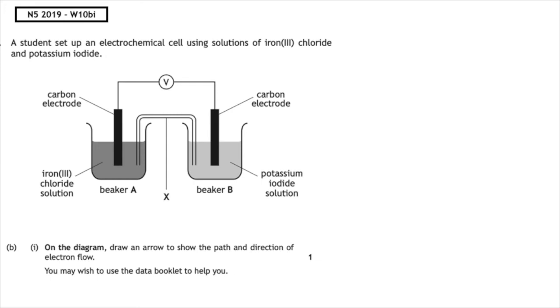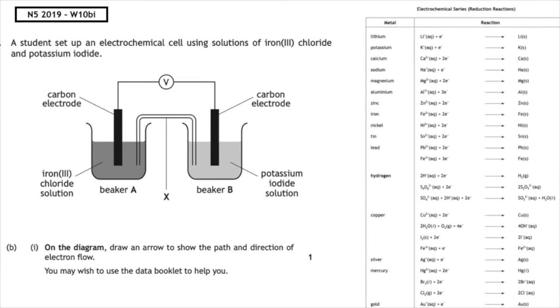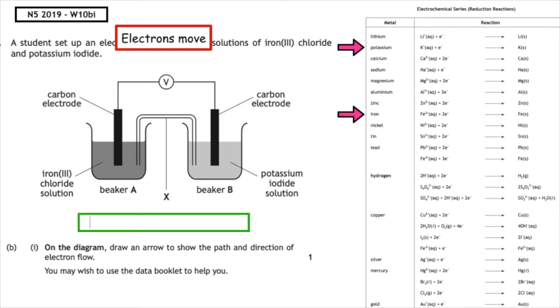Part B to the 2019 paper asks us to, on the diagram, draw an arrow to show the path and direction of the electron flow. You may wish to use the data booklet to help you. So when we look at page 10, we're wanting to look up the two metals which are provided on the diagram. The only metals which are provided on the diagram are iron and potassium. Remember, electrons flow from metals which are higher in the electrochemical series to metals which are lower in the electrochemical series. This means that they're going to move from the potassium to the iron. Remember, the question wants us to look at the path of the electrons. Electrons flow through the wire, so we would need to make sure that it passes through the voltmeter on the diagram.